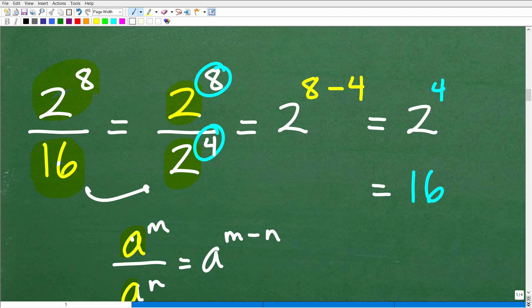So I can just look at this problem like, oh, 2 to the 8th, oh, 16 is the same thing as 2 to the 4th. So now all I need to do is subtract away 4 from 8 or 8 minus 4 is 4, right? So that's my new exponent or 2 to the 4th, which, of course, is 16.